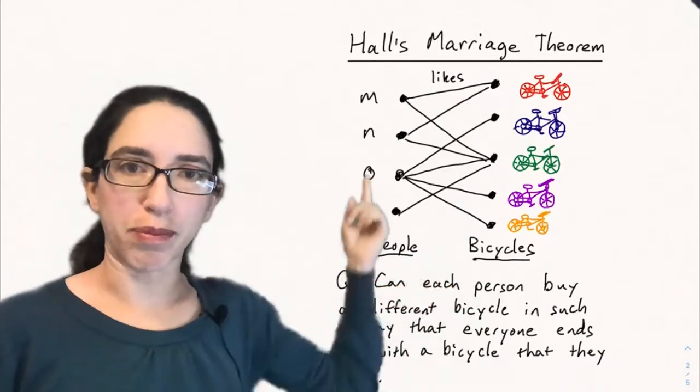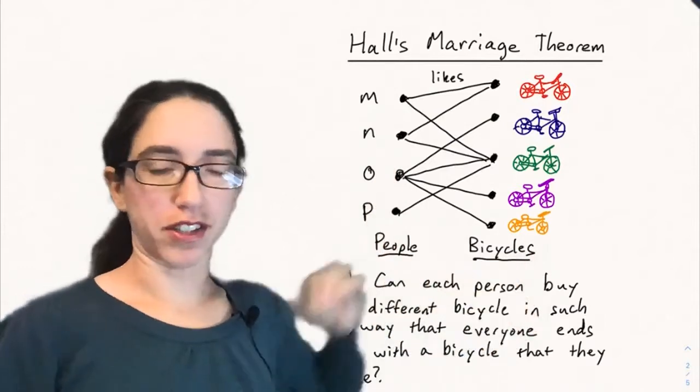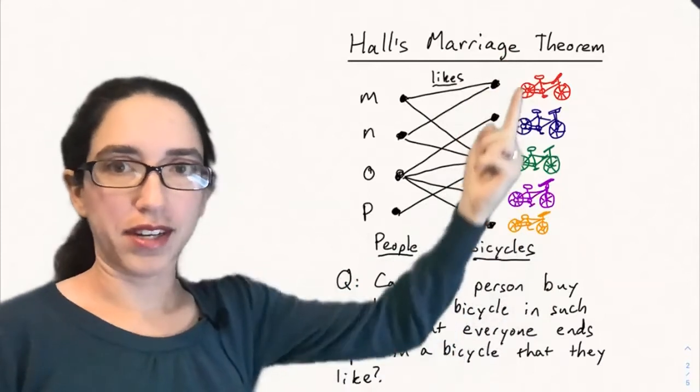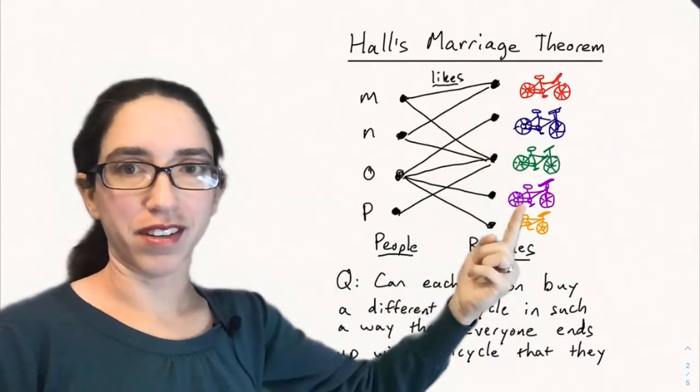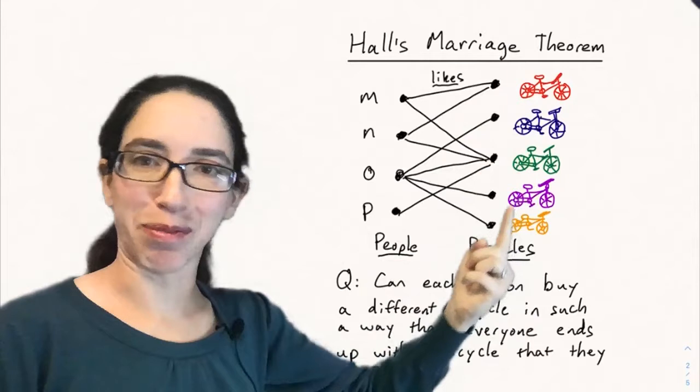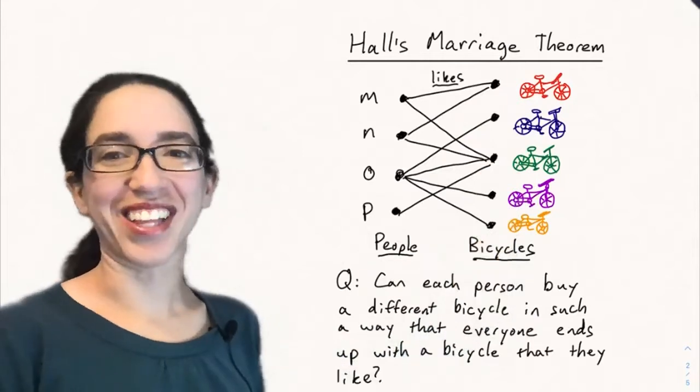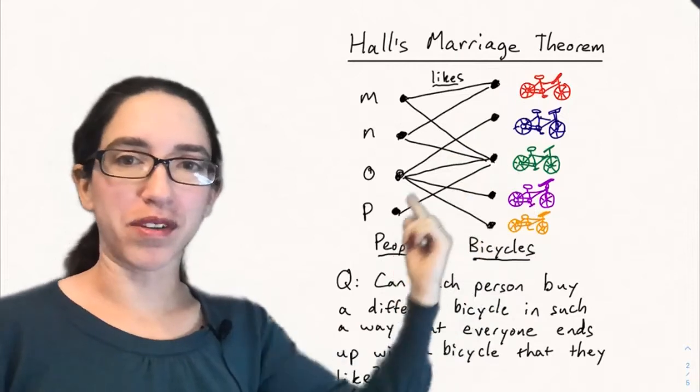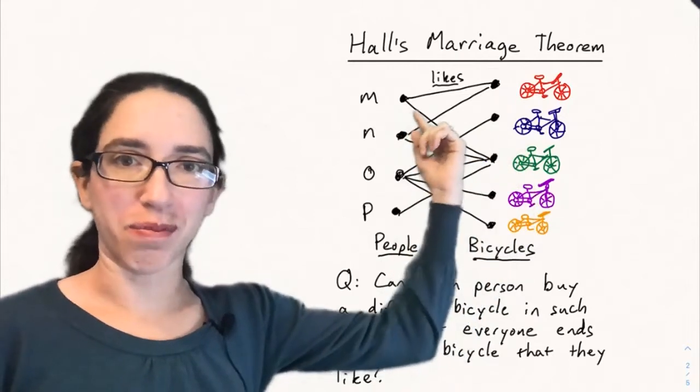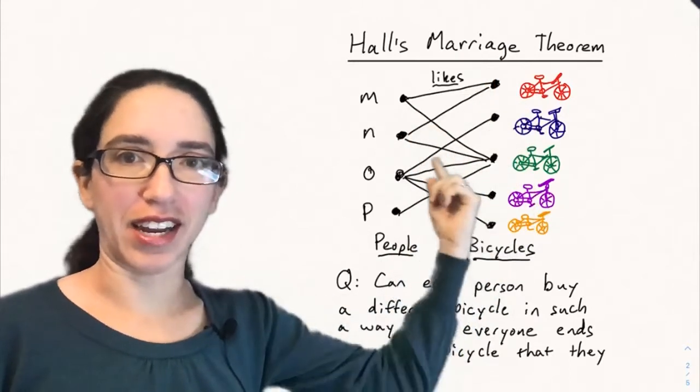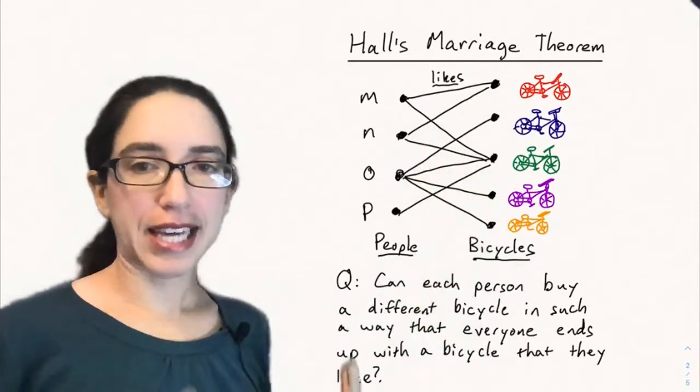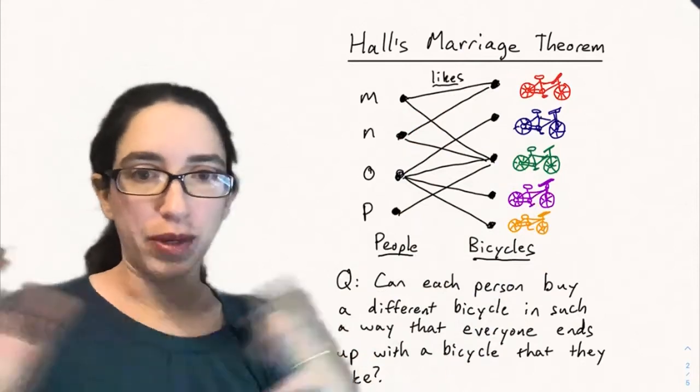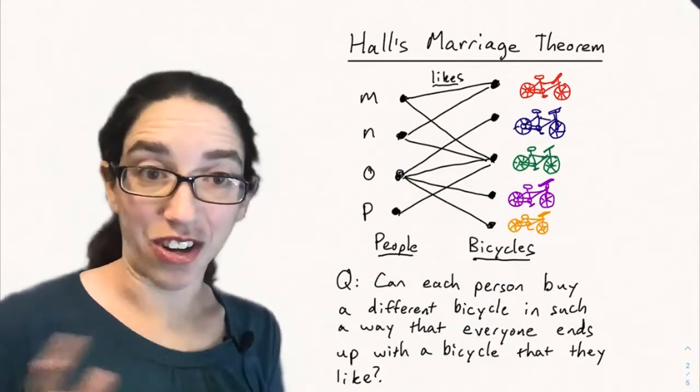Let's look at an example of where Hall's marriage theorem comes into play. Say you have four people, M, N, O, and P, and they walk into a bicycle shop and there's five bikes available. There's the red, purple, green, light purple, and yellow bicycles. And the edges say which people like which bikes. So M likes red and green and N likes red and green and so on.